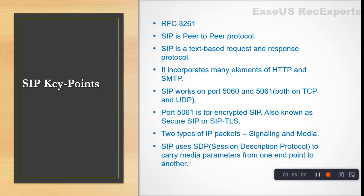SIP works on port 5060 and 5061, on both TCP and UDP. Port 5061 is for encrypted SIP, also called Secure SIP or SIP over TLS (Transport Layer Security). In IP communication there are two types of packets: signaling and media. SIP uses SDP — Session Description Protocol — to carry media parameters from one endpoint to another. SDP is a completely independent protocol; many other protocols can also use SDP. It is not an integral part of SIP.